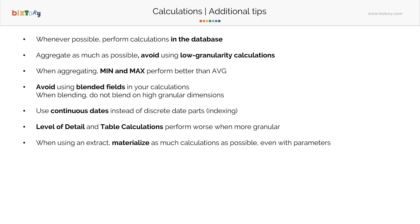Try to blend for example on customers or on regions and then combine your data in that sense. Then, like I said in one of the first topics, the date filtering: use continuous dates instead of discrete date parts, also related to indexing. And level of detail and table calculations, as well as blended fields, perform worse when becoming more granular.